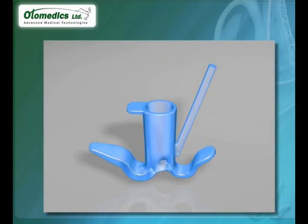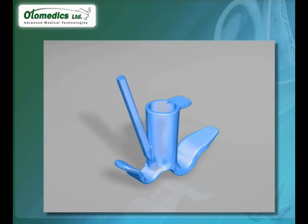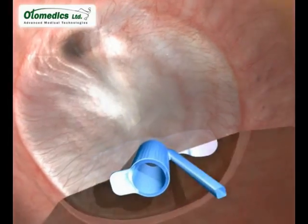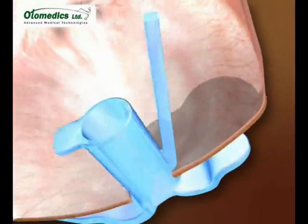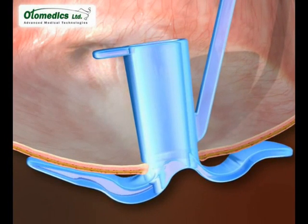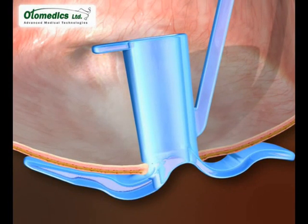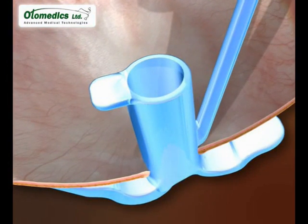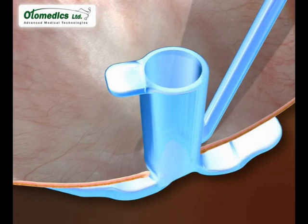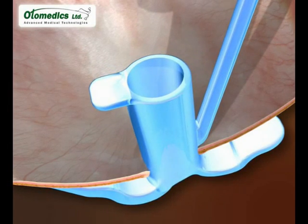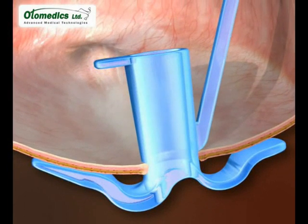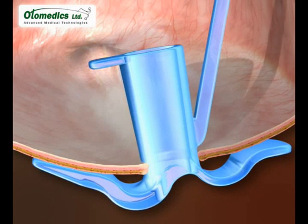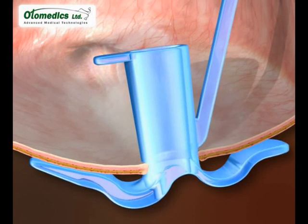Presenting the newly designed tympanostomy tube from Autometics. This soft silicone tube is designed to contact the eardrum at some distance from the rim of the perforation, so as not to interfere with the blood supply of the rim. The lumen of the shaft is conical, allowing easy cleaning of clogs, and its flexibility enables repositioning after cleaning. It has a thick anterior arm that resists natural extrusion and a collapse mechanism activated by pulling the extraction handle and rotating the tube on its axis during extrusion.